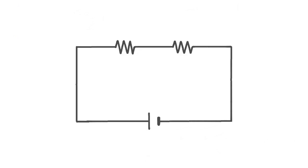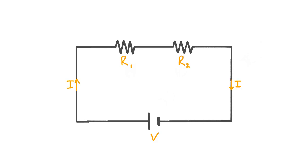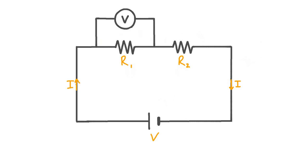More commonly, we might use a voltmeter to measure the potential drop over individual components in a circuit. Here we have a cell and two resistors wired in series, with resistances R1 and R2 respectively. The cell provides a voltage V and creates a current I. If we want to measure the voltage dropped across each of these resistors, to measure the voltage drop across R1 for example, we would attach a voltmeter in parallel with R1.